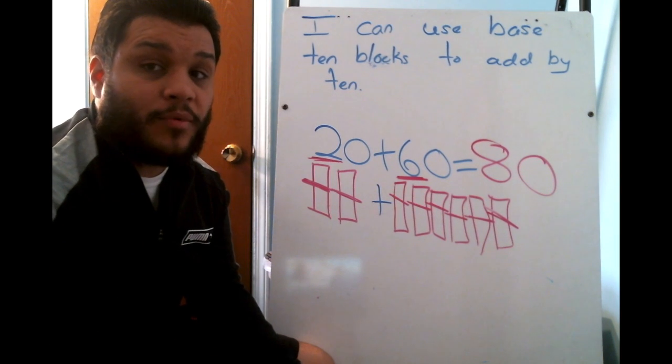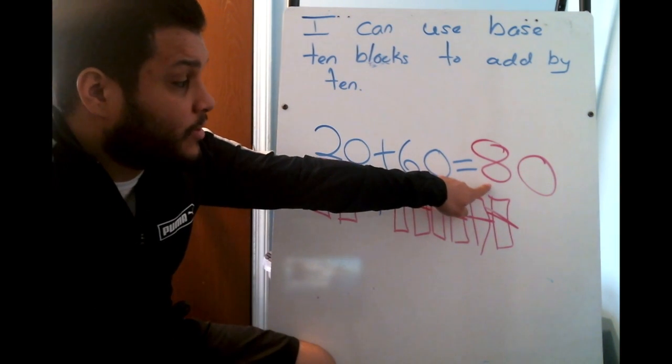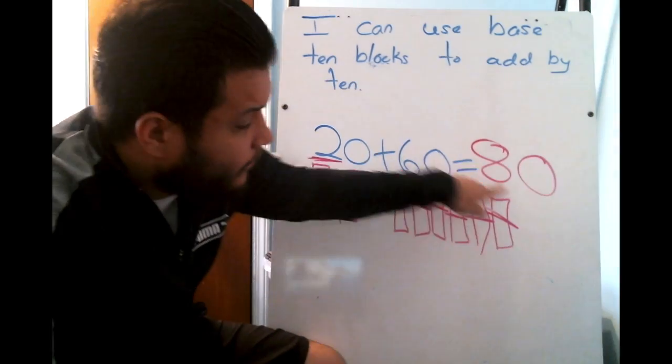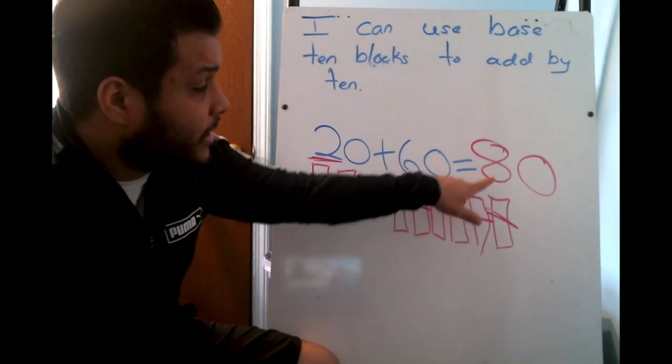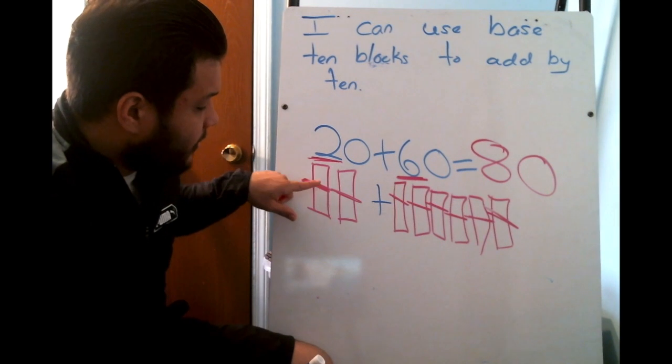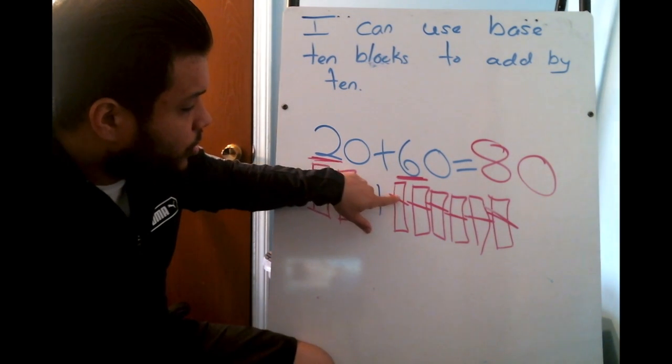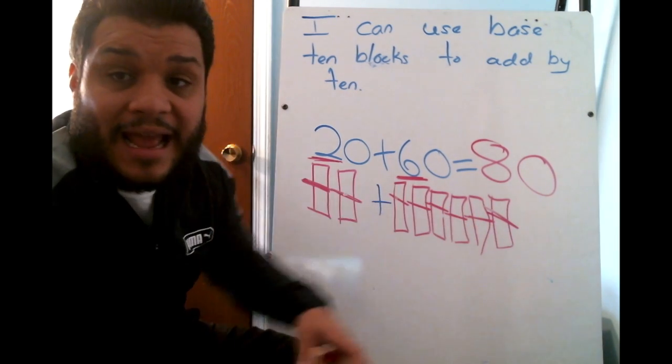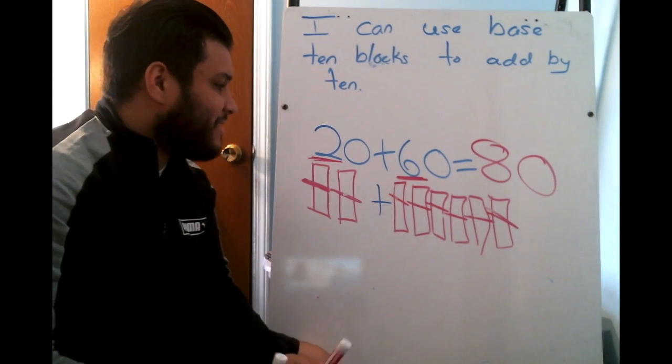The way that I will check my work is I would see what numbers in my 10s place, 8, which means that all of these base 10 blocks should equal 8. Let's count them, 1, 2, 3, 4, 5, 6, 7, 8. Awesome job.